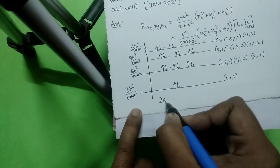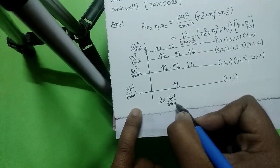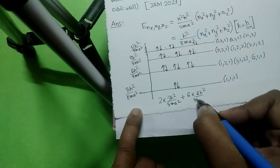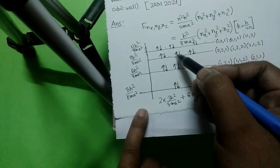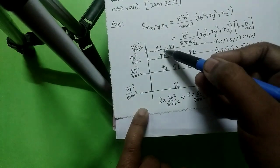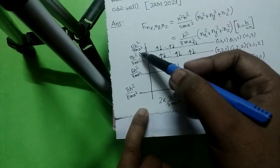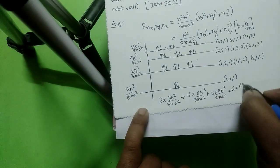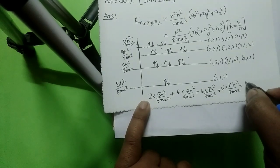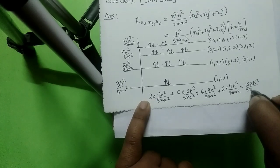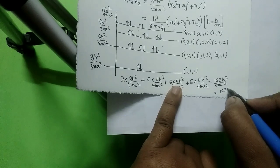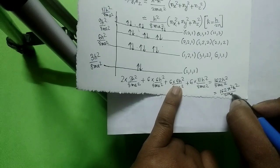The total energy is calculated as: ground state — 2 particles × 3h²/8ma²; second level — 6 particles × 6h²/8ma²; third level — 6 particles × 9h²/8ma²; fourth level — 6 particles × 11h²/8ma². Summing these gives a total energy of 162h²/8ma², which can also be written as 162π²ℏ²/2ma².